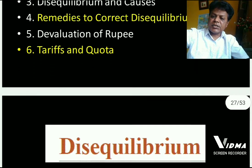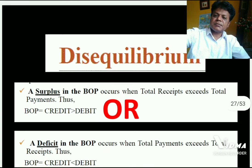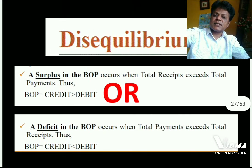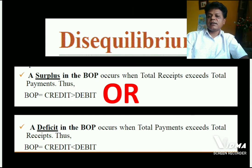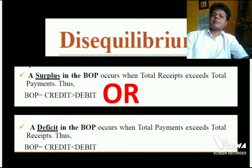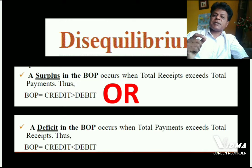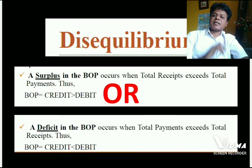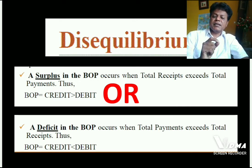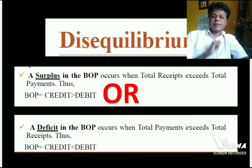When we say disequilibrium in balance of payment, there are two possibilities. The balance of payment can be surplus or the balance of payment can be deficit. When we say balance of payment is surplus, it means receipts are greater than payments. And if we say deficit in balance of payment, it means receipts are less than the payments.